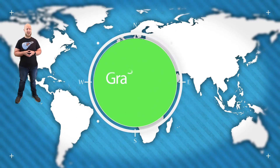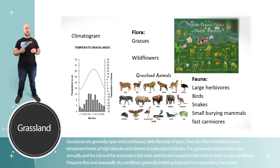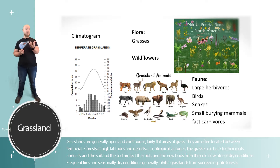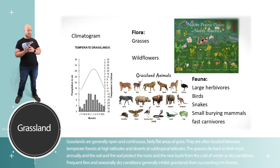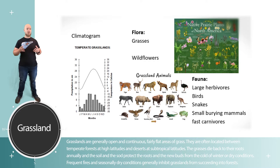A grassland climate tends to be somewhat similar to a deciduous forest — they are commonly found along the same lines of latitude — however grasslands get less rain than deciduous forests. The defining plant community is grasses, a few shrubs, and wildflowers. As far as animals, this is where you get your large herbivorous mammals. Importantly, grasslands are maintained by fire — especially during dry months, fires start and stop grasslands from succeeding into forests.